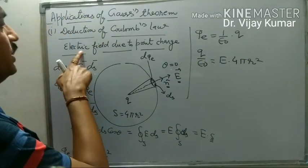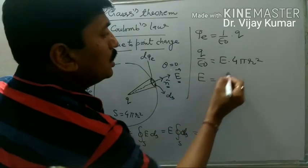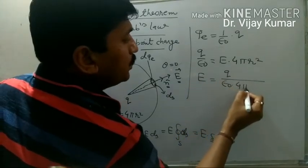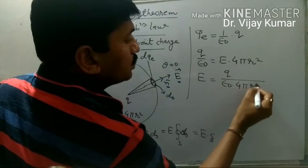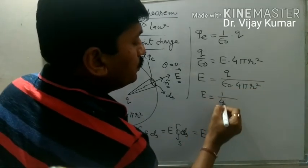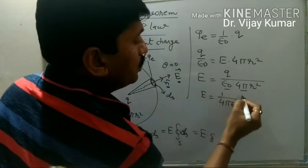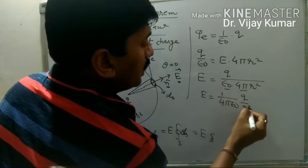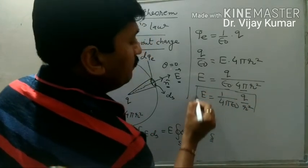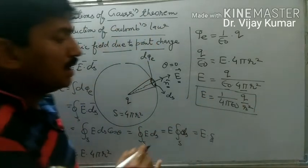We want to determine the electric field: E equals q upon epsilon naught times 4 pi r square, or electric field E equals 1 upon 4 pi epsilon naught times q upon r square. This is the derivation of the electric field due to a point charge q.